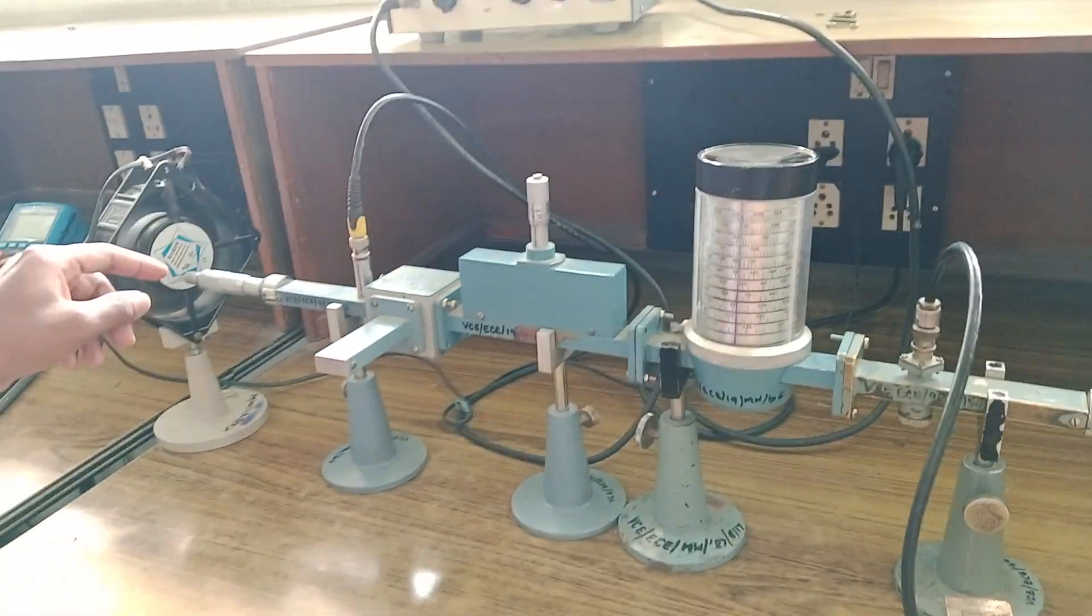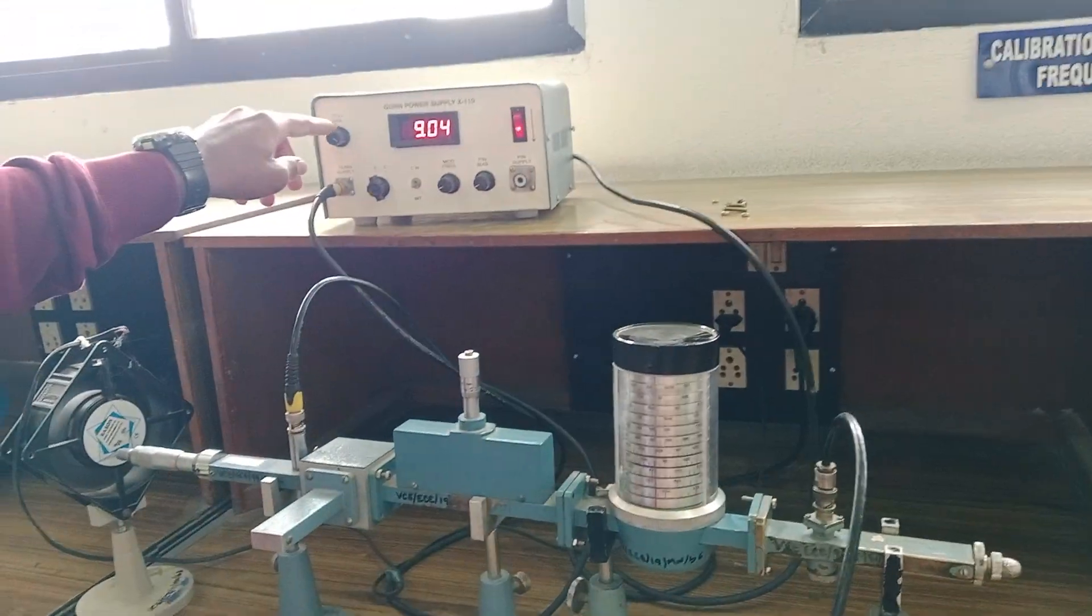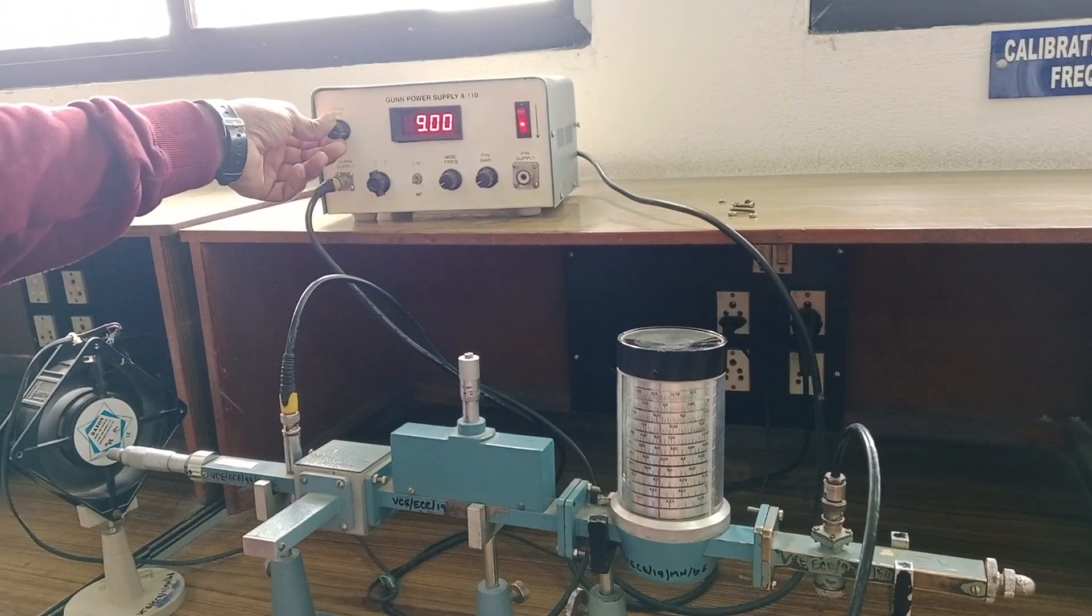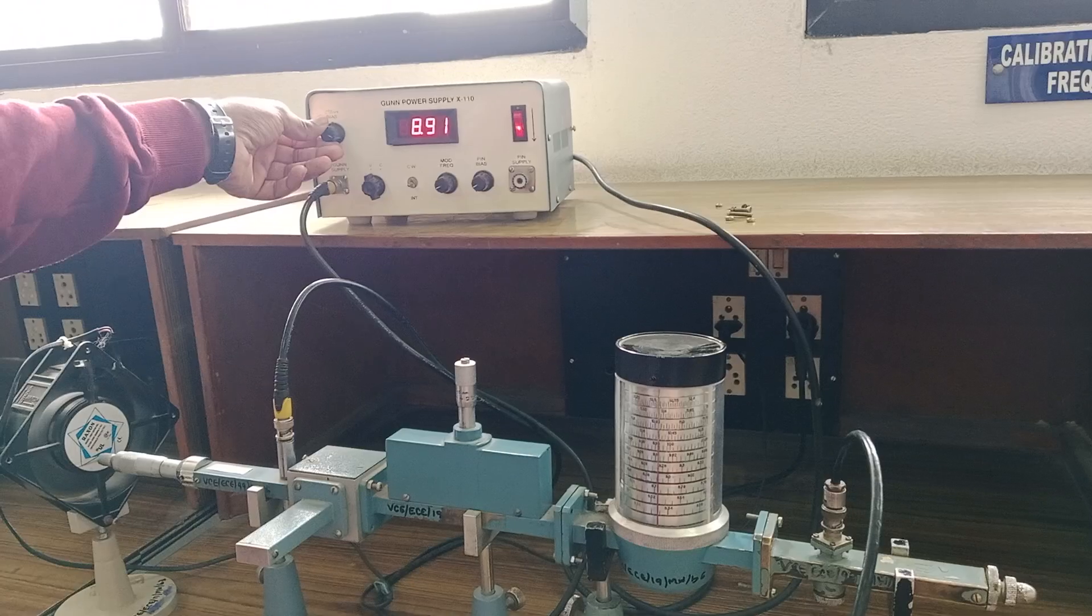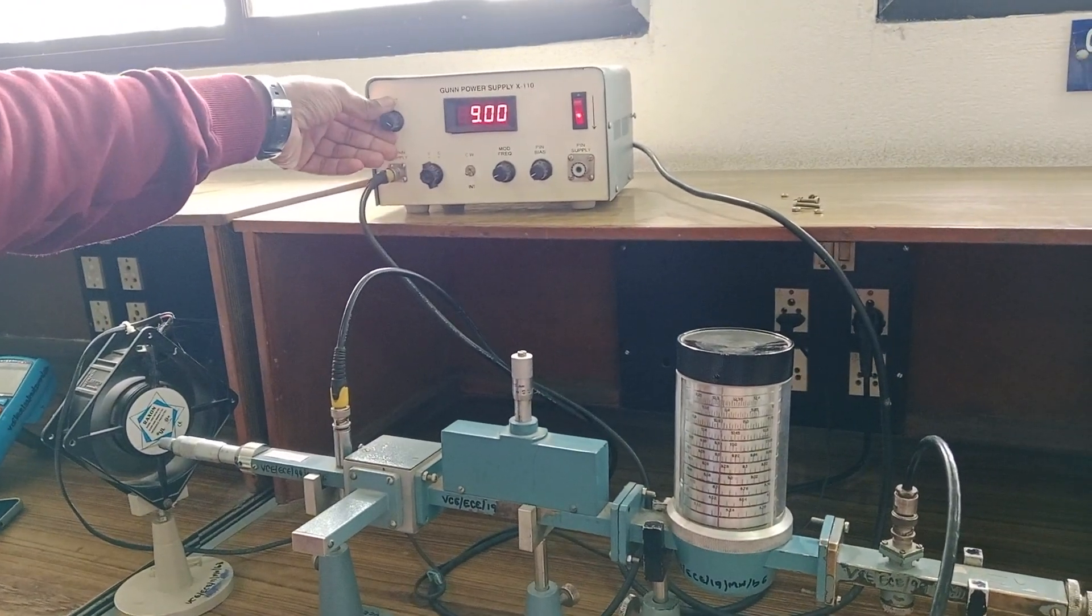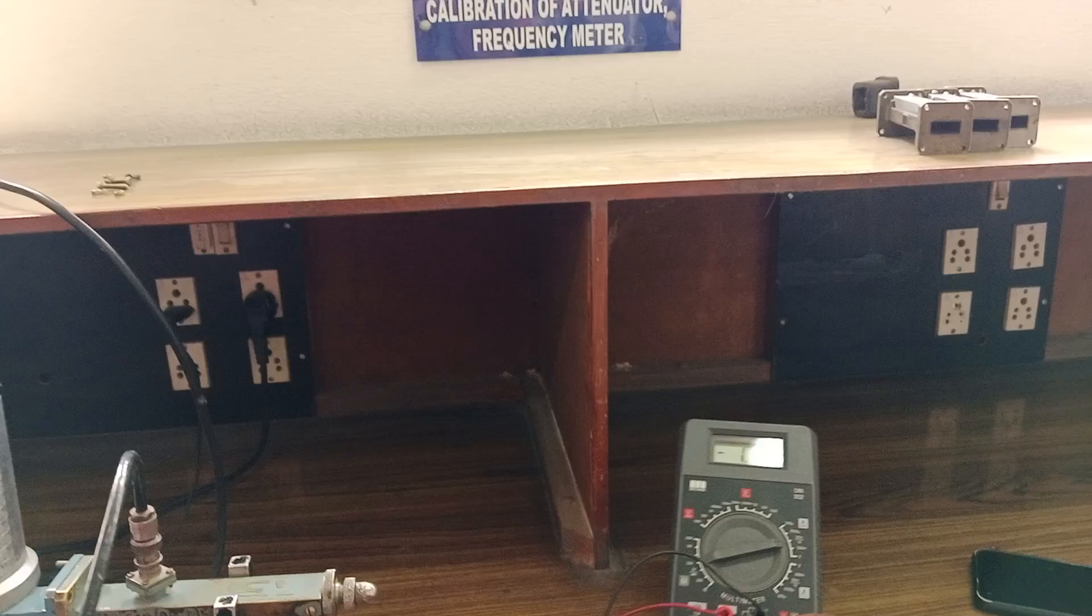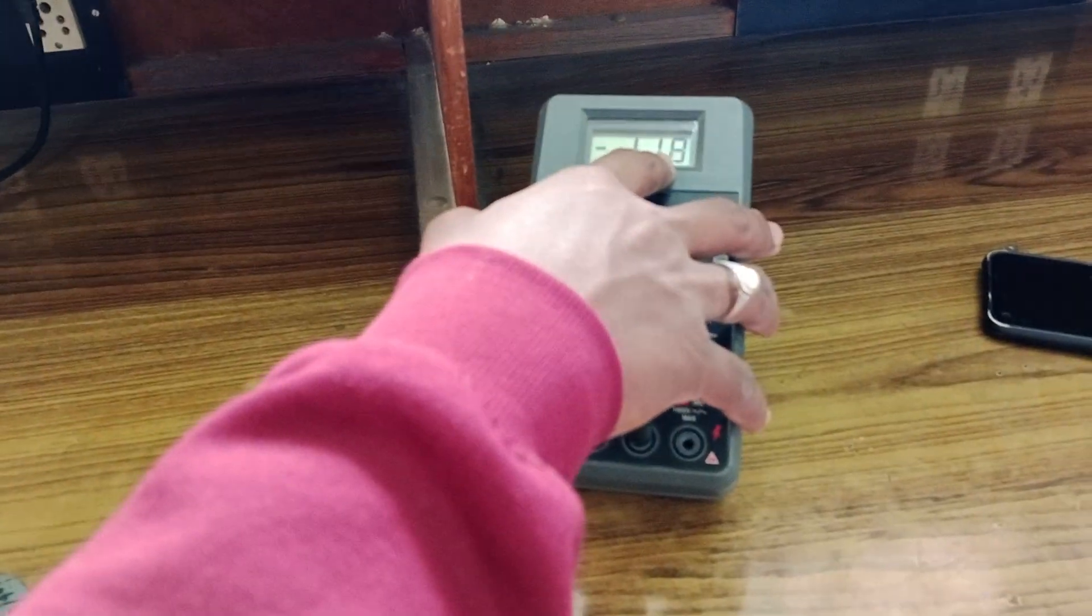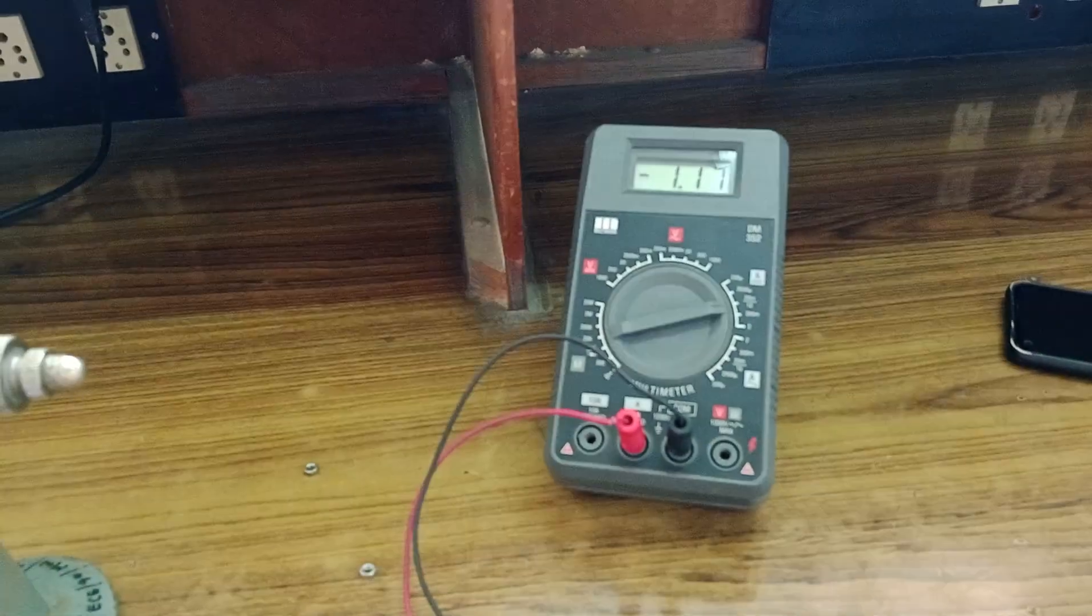Currently, first what we have to do is once you turn on the gun power supply, you have to keep this in the voltage mode and vary the gun bias to keep exactly 9 volts. Once you keep it as 9 volts, here you have to see the current rating. So here it is showing 1.17, sometimes it might not show 1.17.